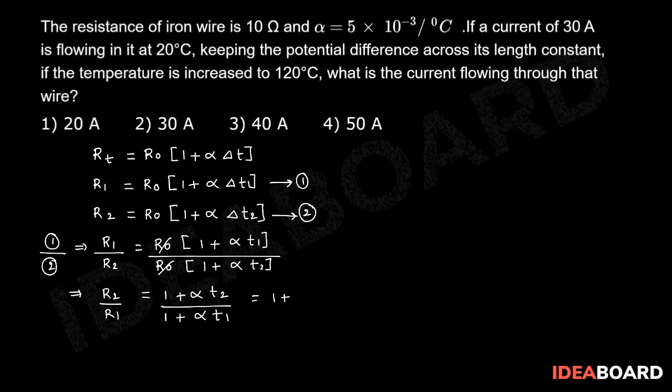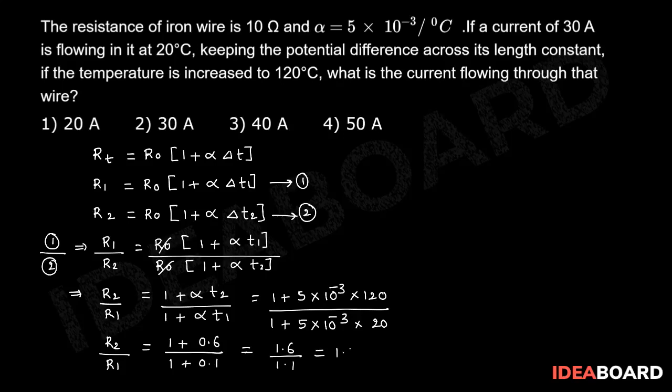That equals (1 + 5 × 10⁻³ × 120) divided by (1 + 5 × 10⁻³ × 20). Therefore, R2 by R1 equals (1 + 0.6) by (1 + 0.1), which equals 1.6 by 1.1, which is equal to 1.5 approximately.